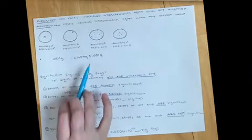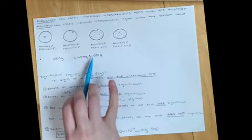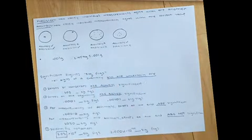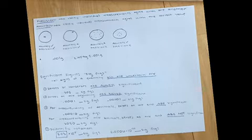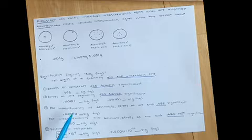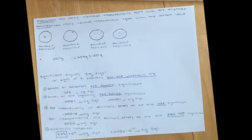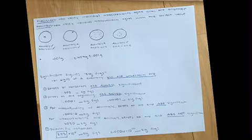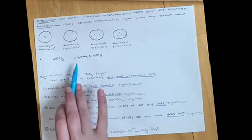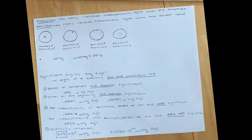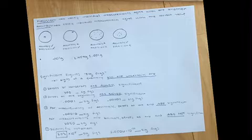We need this plus or minus 0.001 to confirm our measurement is what it should be. However, it's hard to write every value like this, so it's just implied that with any measurement it will be uncertain. For example, 2.454 isn't the exact mass — it's actually plus or minus 0.001 gram.